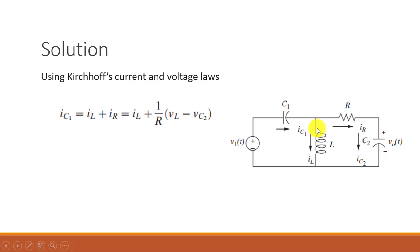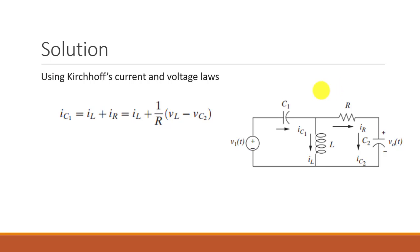The resistor current IR is the current flowing due to the difference of voltages across the inductor and capacitor C2. So IR = (VL − VC2) / R. We put in the values: IL as is, and IR as (1/R)(VL − VC2), assuming the inductor voltage is greater than the capacitor voltage since current flows rightward. Choosing different directions would change signs but the result would be the same.